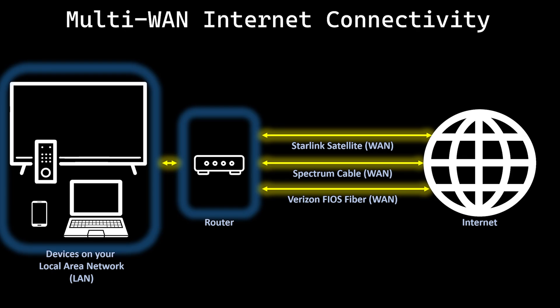My house never has downtime. My family never needs to rely on their phones because of an outage — and that's a good thing because cell service is terrible where we live. Aside from the hardware and a little more router setup, the recurring cost is just the second internet connection. If eliminating your downtime is worth that cost, you should definitely implement a multi-WAN solution. If you already have a power continuity solution like a whole-house generator or battery backup, implementing a multi-WAN setup seems like a no-brainer.